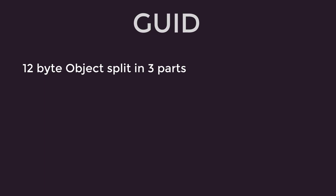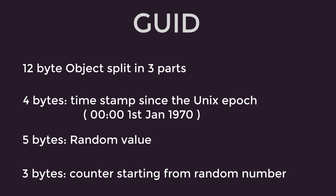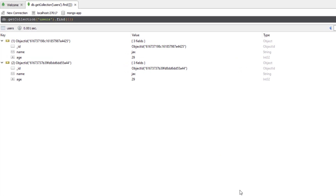Four bytes of it is a timestamp since the Unix epoch, which starts from 00:00 hours January 1st, 1970, five bytes of randomly generated numbers, and three bytes of a counter that starts from a random value. This is what allows a GUID to be unique across the entire globe. So if I want to find the first Jacks who happens to be 29, and not the second Jacks, I can find that document using its globally unique identifier.